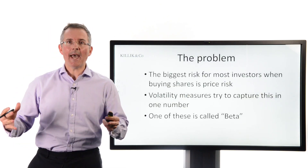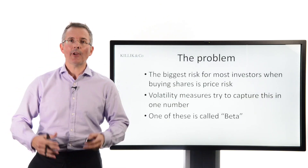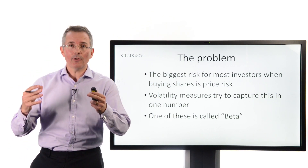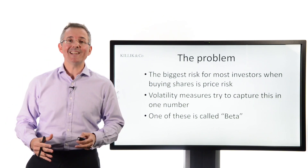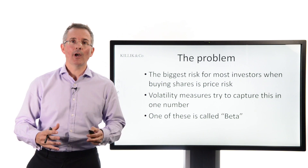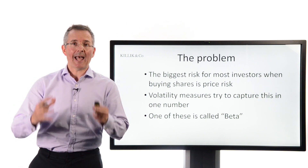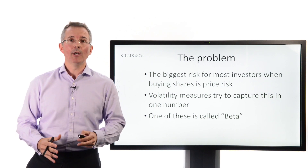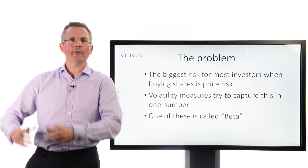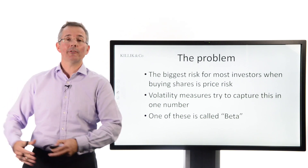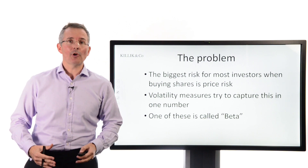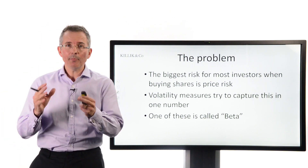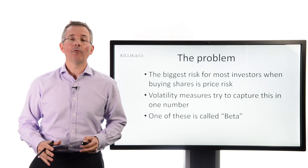The problem — why do we care about something called beta? Why would anyone put that on a research report? Well, the biggest problem for most investors — it's not the only problem when picking shares, but the biggest one — is price risk. What is the risk that shares go down as well as up? There are other risks that beta doesn't deal with, such as liquidity risk and default risk, but that's not what beta's about.